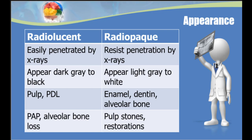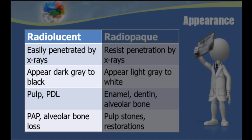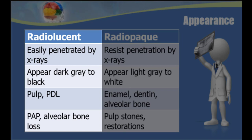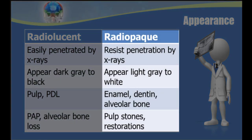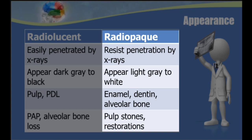Radiolucent structures are easily penetrated by the x-ray beam, so they appear dark gray to black on a processed film. Normal structures that are radiolucent include the pulp and the periodontal ligament space. Diseased areas of the periodontium can also appear radiolucent, such as periapical pathosis and alveolar bone loss. Radiopaque structures resist the penetration of the x-ray beam, so they appear light gray to white on a processed film. Examples of normal radiopaque structures include the enamel, dentin, and alveolar bone.